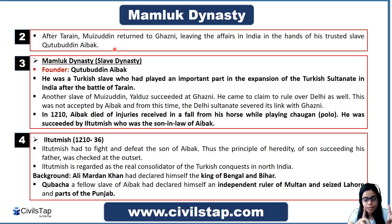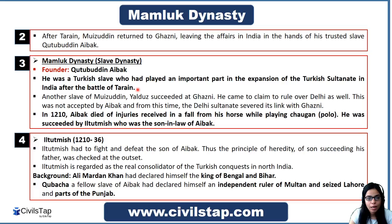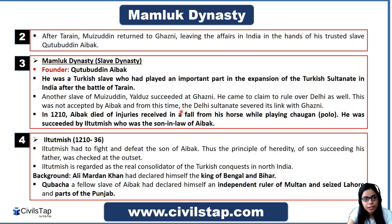The foundation of the Mamluk dynasty was laid by Qutubuddin Aibak, a Turkish slave who played an important role in the expansion of the Turkish Sultanate in India after the Battle of Tarain. Muhammad Gauri had another slave named Yaldus, who succeeded in Ghazni. Yaldus also came to India to claim rule over Delhi, but this was not accepted by Qutubuddin Aibak, who established his own rule over Delhi. This is where the Delhi Sultanate's separation from Ghazni began.